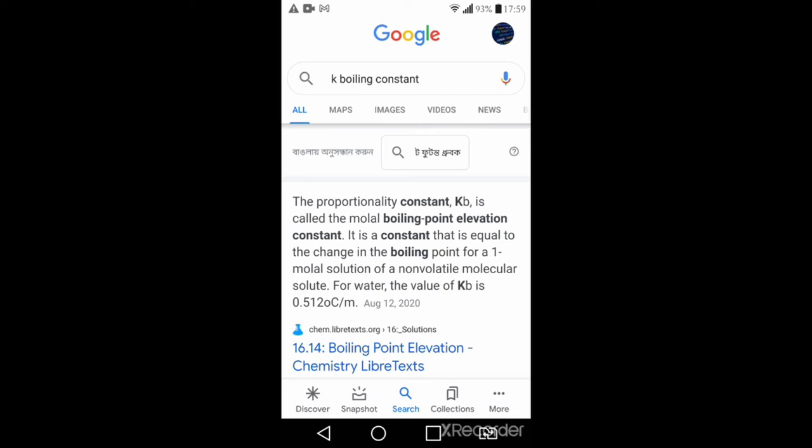Google says kb, the proportionality constant, is called the molal boiling point elevation constant. It's a constant that equals the change in boiling point for a one molal solution of a non-volatile molecular solute. For water, the value of kb is 0.512°C per m.